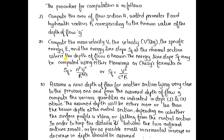Before we discuss the problems on gradually varied flow, let us discuss the procedure for finding the length of the backwater curve. The first step is to compute the area of flow section A, wetted perimeter P, hydraulic radius R, mean velocity V, velocity head V²/2g, specific energy E, and energy line slope SF.